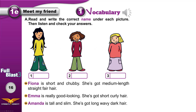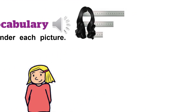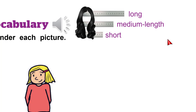Each name is followed by a short description. Fiona is short, chubby, medium-length, straight, fair hair. Let's first understand what these descriptions mean. Hair could be long, medium-length, or short.